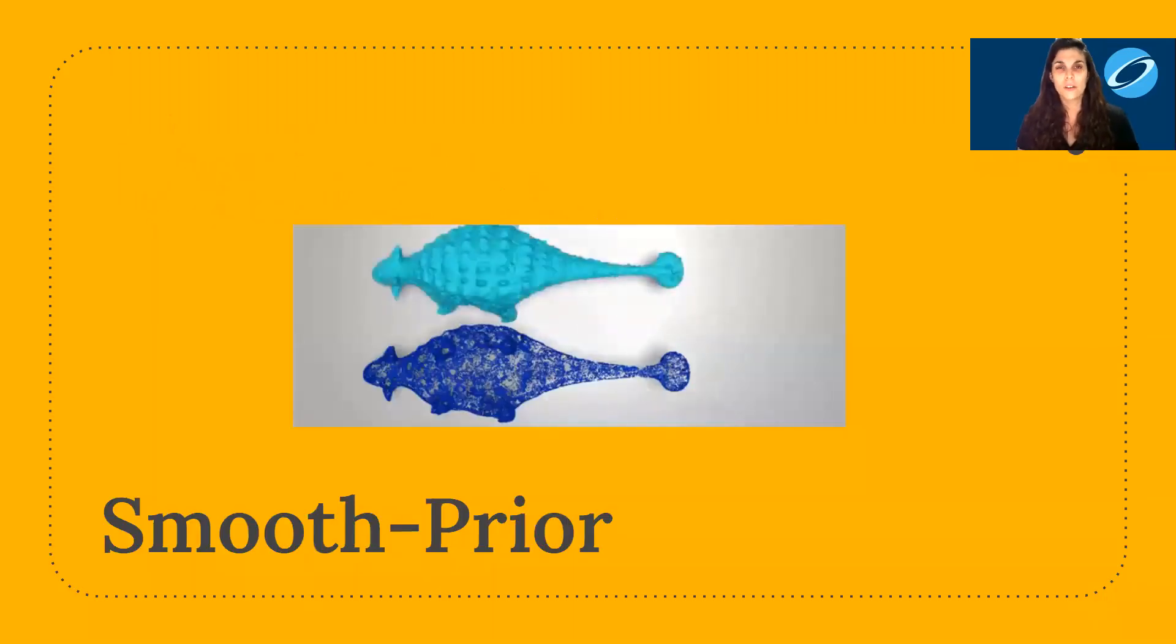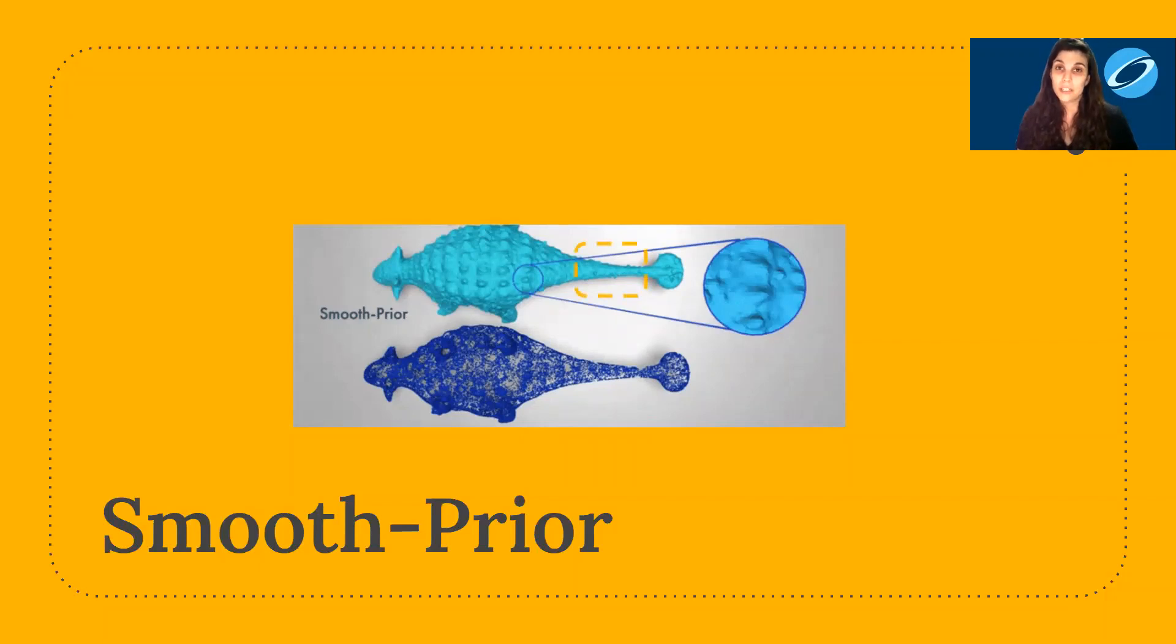This often results in defining a generic smoothness prior. Even though shapes are typically piecewise smooth, this generic prior isn't tailored enough to the current input, which can result in overfitting to noise. For example, observe the noisy bumps around the tail region.